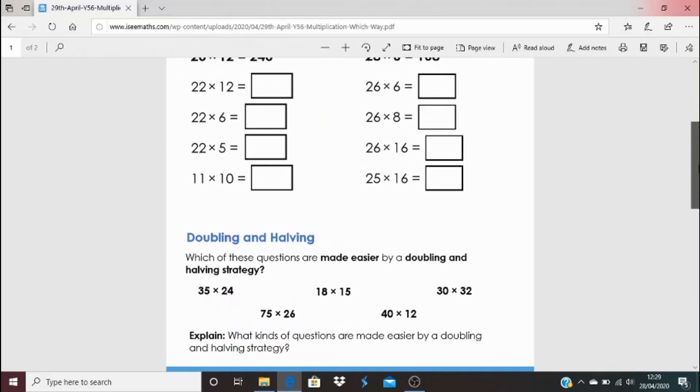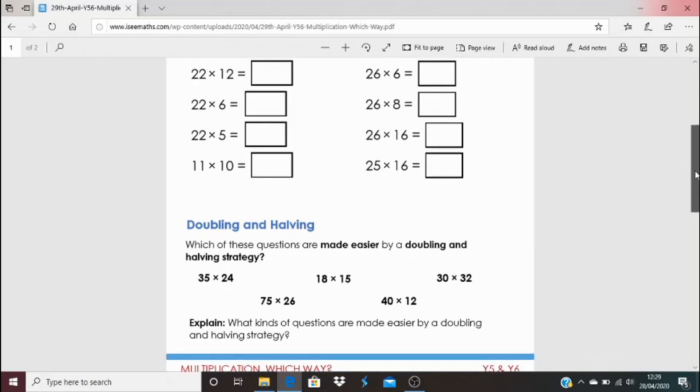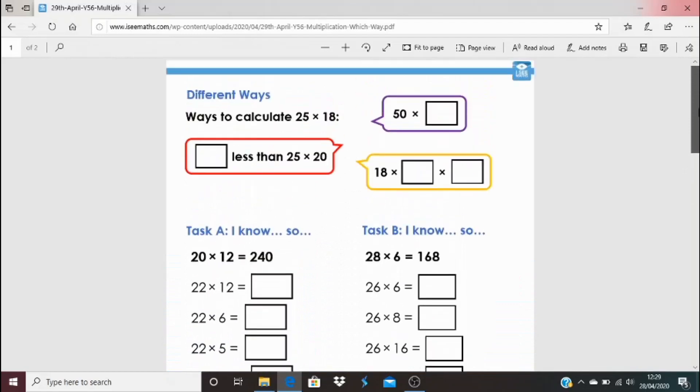Equally, there's another question at the bottom about doubling and halving. So, of those questions, which are made easier using that doubling and halving strategy? Why are some questions made easier by a doubling and halving strategy and not others? It'd be great to get your thoughts on that, see your examples coming through. The answers are underneath like normal. And I hope those activities really help you to see links between different multiplication questions and tasks. I'll see you again tomorrow.